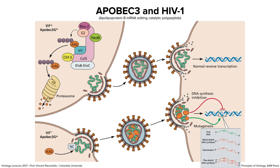ApoBec3 is a protein always present in our cells. A3G — that's ApoBec3 — is one of the different kinds of ApoBecs. It can be incorporated into virus particles. The orange ovals representing A3G are being incorporated into HIV particles as they bud off from the cell. When those particles infect a new cell, reverse transcription occurs: the RNA genome is reverse transcribed to form DNA, and that's where ApoBec proteins act.